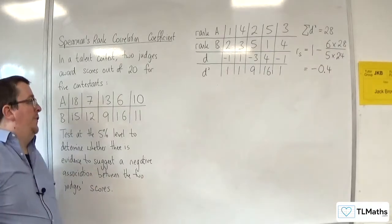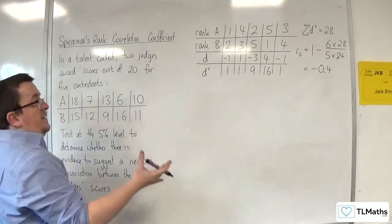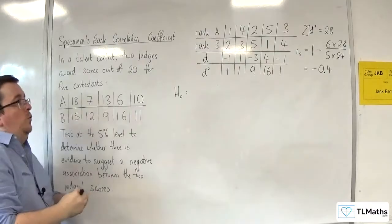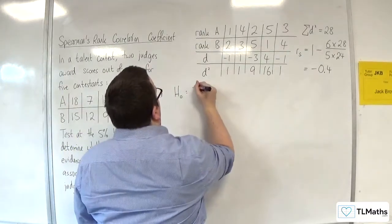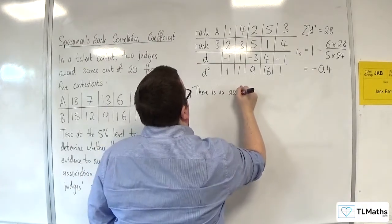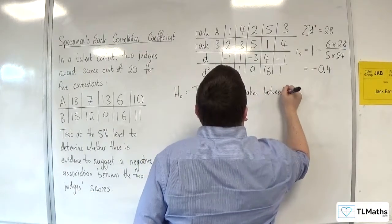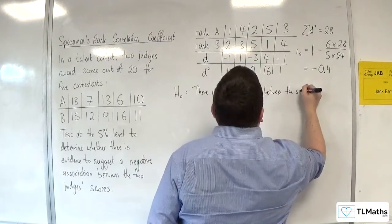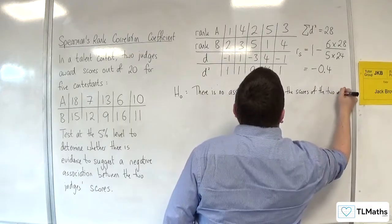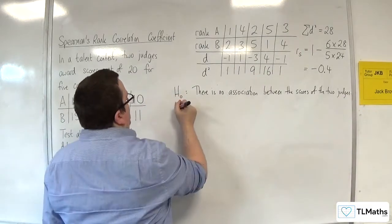So, now the hypothesis test. So, we start off with the Spearman's hypothesis test, stating the null hypothesis. Which is that there is no association between the scores of the two judges. So, we want to write that in context.